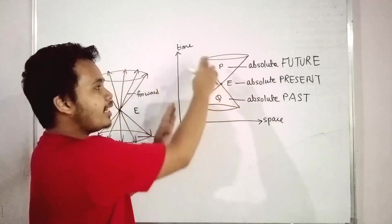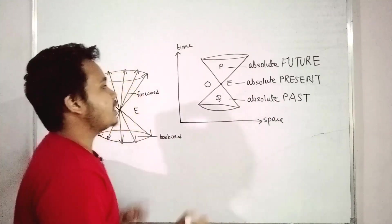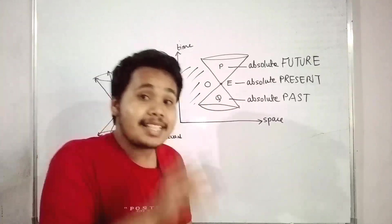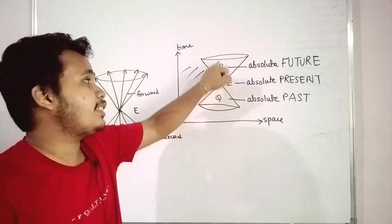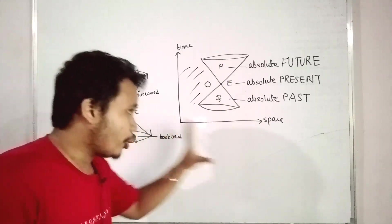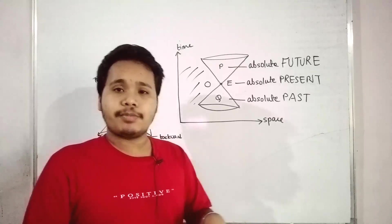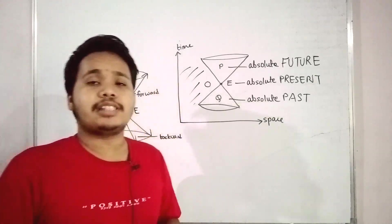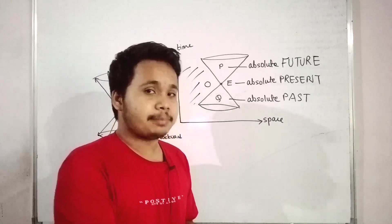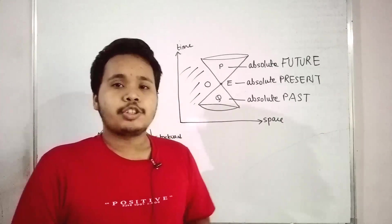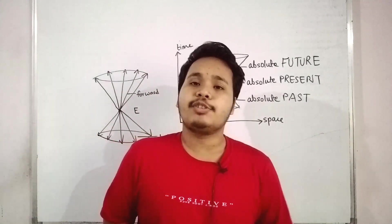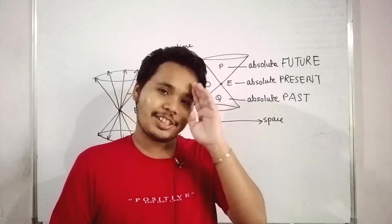Any event outside this light cone will be totally inaccessible to any event within the two light cones. So I hope you have understood the concept. The light cone definition can be written as: the propagation of light in Minkowski space is called the light cone. For any doubts, you can reach me in the comment section. Thank you.